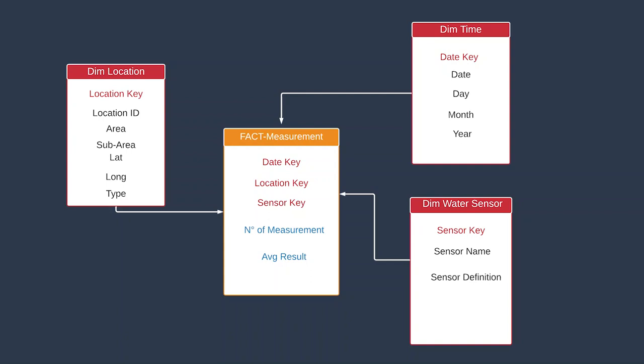For the fact table, we have the three surrogate keys from our dimensions and two measures: the number of measurements, like the number of tests in a day for a specific type of sensor and location and date, and the average result of that.